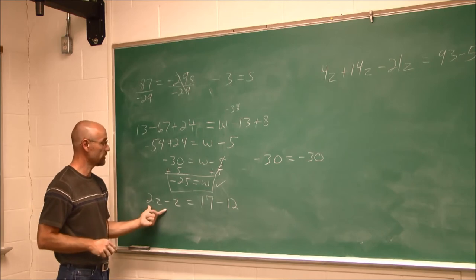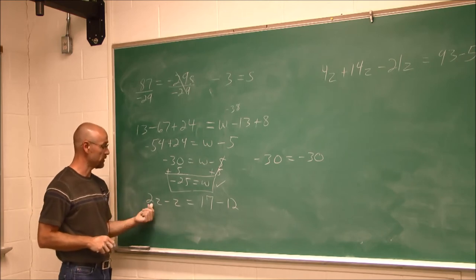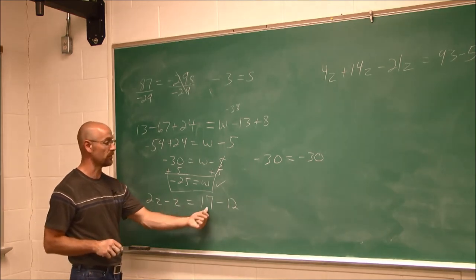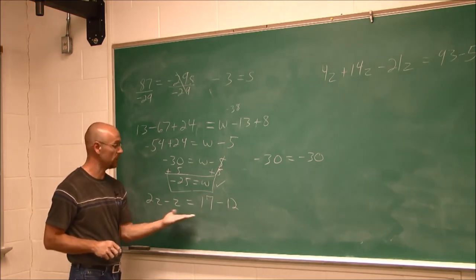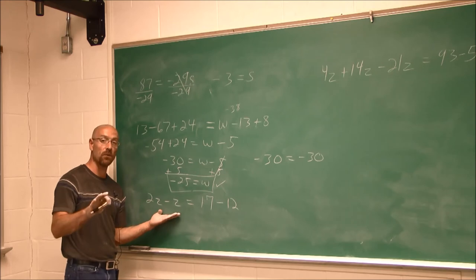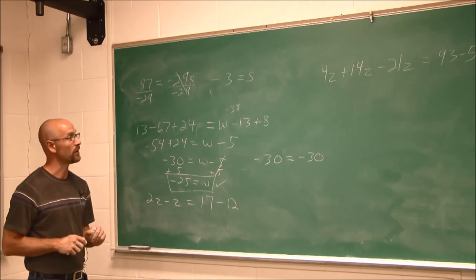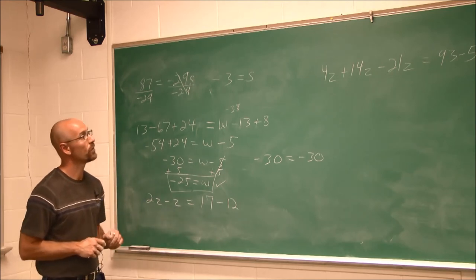This example — 2z minus z equals 17 minus 12 — is one I want you to try yourself. Pause the video, work it out, and hopefully you feel confident with it.